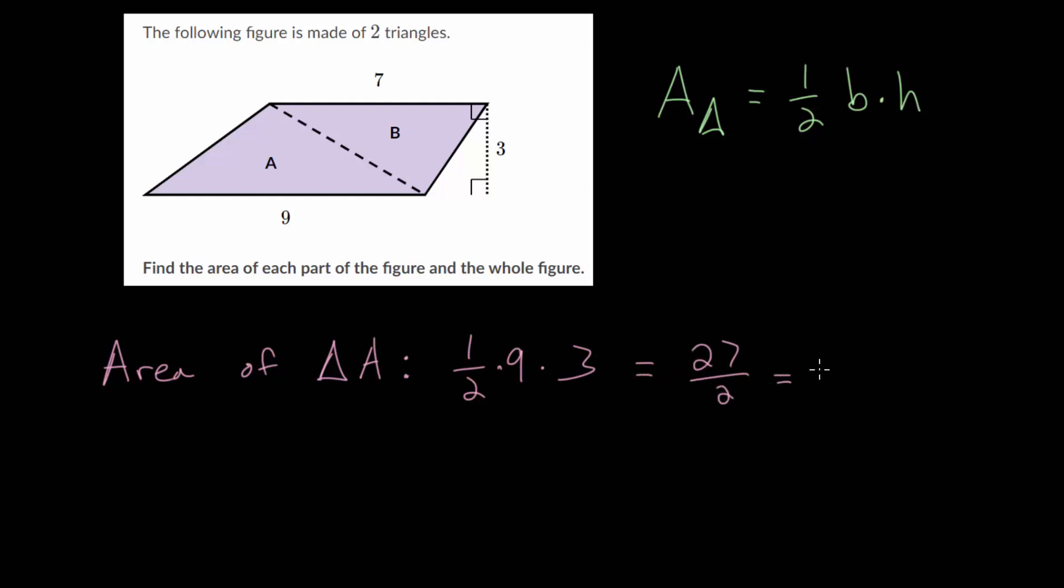If we want, we can write this as a decimal. Two goes into 26, 13 whole times, and we'd have one half left over. So this is 13.5.